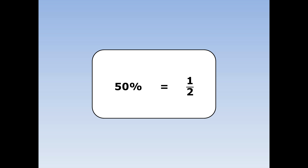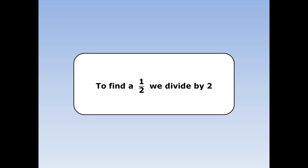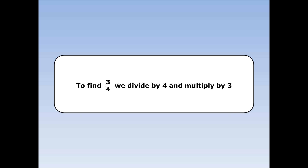50% is the same as a half. 25% is the same as a quarter. 75% is the same as three quarters. To find a half, we divide by two. To find a quarter, we divide by four. And to find three quarters, we divide by four and multiply by three.